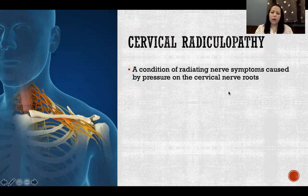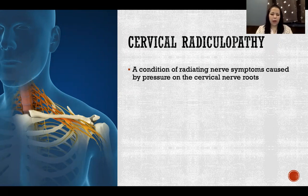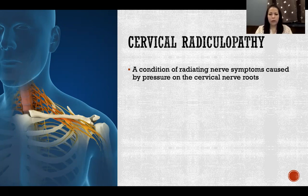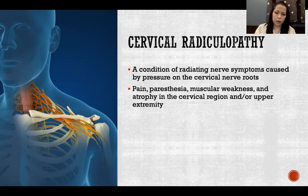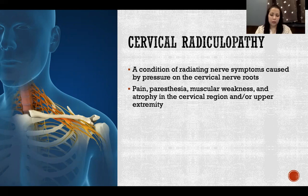Cervical radiculopathy is a condition of radiating nerve symptoms caused by pressure on the cervical nerve roots. Radiculopathy in any case involves some kind of impingement or injury to a nerve causing radiating symptoms anywhere along the length of that nerve. It is a type of referred pain specifically caused by nerve impingement or injury. Symptoms would include pain, paresthesia, muscle weakness, and atrophy in the areas those nerves supply — in this case, the cervical region and/or the upper extremity.